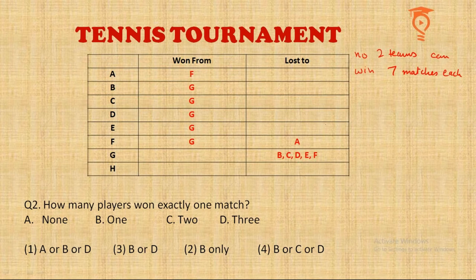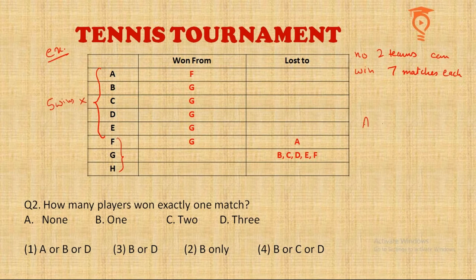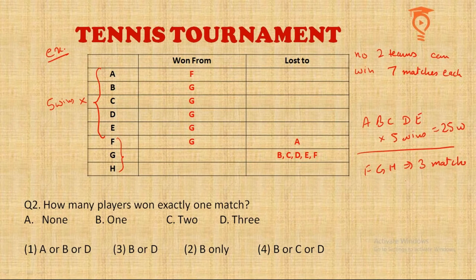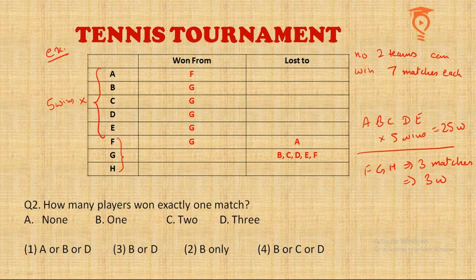So, let me take an example for this question. Suppose A, B, C, D, E are the players who win five matches each — that gives 25 wins. Now F, G, H are the remaining three. These three will play matches among themselves: F vs G, G vs H, and F vs H. These three matches among themselves will generate exactly three wins. This means none of F, G, H won against A, B, C, D, or E — otherwise more than three wins would come from this group. So all three lost to the top five players.